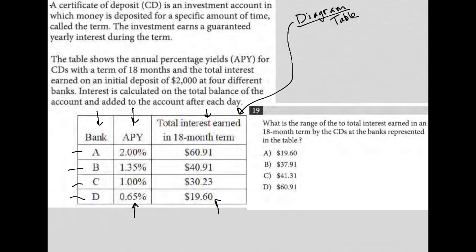The information here says a certificate of deposit CD is an investment account in which money is deposited for a specific amount of time called the term. The investment earns a guaranteed yearly interest during the term. The table shows the annual percentage yields for CDs with a term of 18 months and the total interest earned on an initial deposit of $2,000 — that's very important. So $2,000 is my initial deposit, my initial money in, at four different banks.